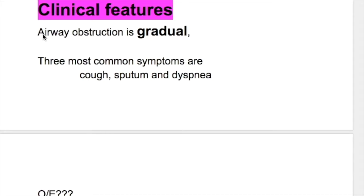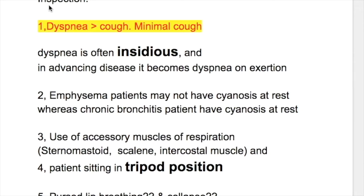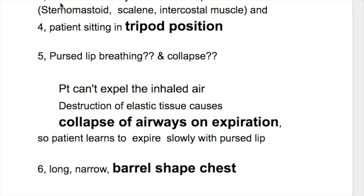Clinical features of emphysema: number one, airway obstruction is a gradual process. Number two, the three most common symptoms of COPD are cough, sputum, and dyspnea. In emphysema, dyspnea is more prominent than cough, whereas cough is more prominent in chronic bronchitis. Number two, emphysema patients may not have cyanosis at rest, whereas chronic bronchitis patients have cyanosis at rest. Number three, these patients use accessory muscles of respiration — sternomastoid, scalene and intercostal muscles. Number four, the patient sits in a tripod position.